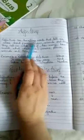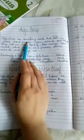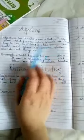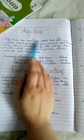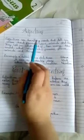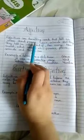Adjectives are describing words that tell us more about persons, places, animals, and things. So what are describing words? Adjectives are describing words. They tell us about persons, places, animals, and things.